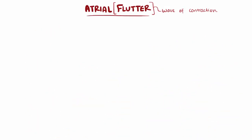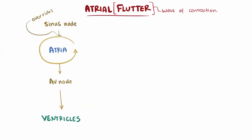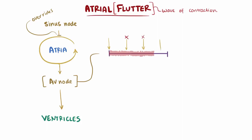In order for the ventricles to contract, that signal needs to move down through the AV node. Luckily the AV node has a relatively long refractory period, meaning it can't conduct every single impulse being sent from the atria, and typically maxes out around 180 beats per minute, meaning it has to wait a minimum of about one third of a second, or 333 milliseconds, until it can relay another signal.